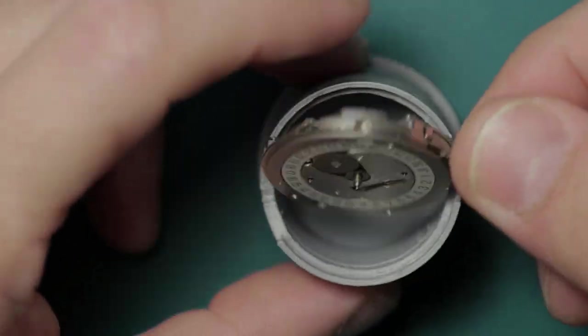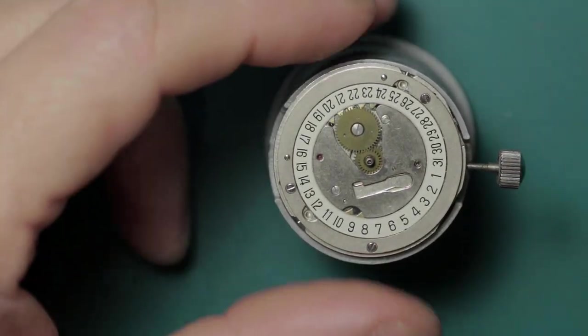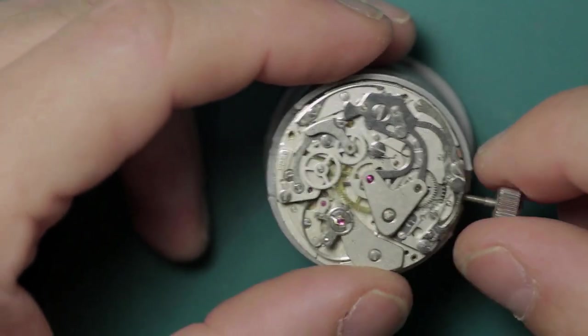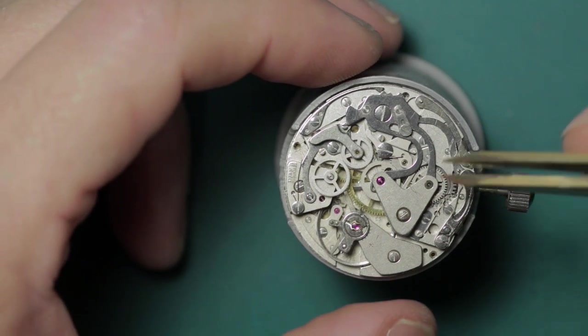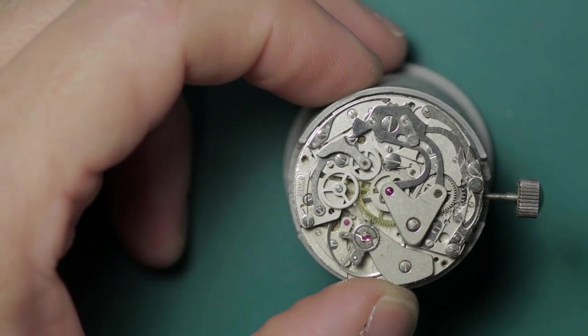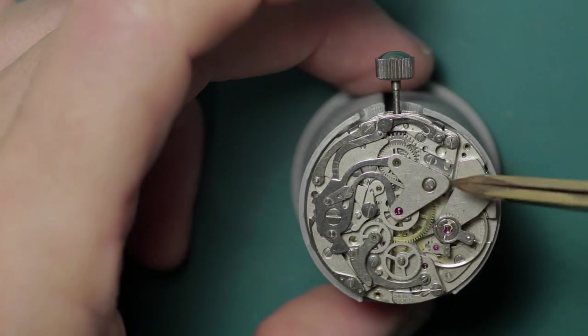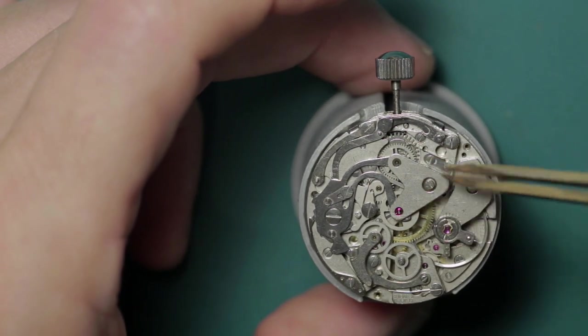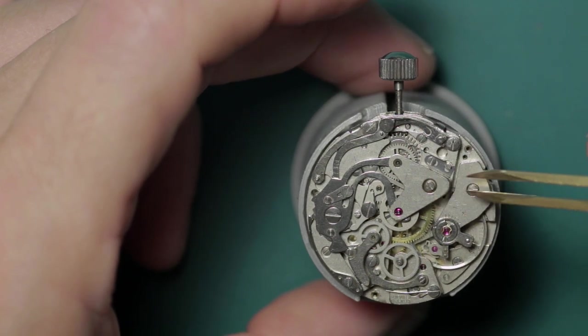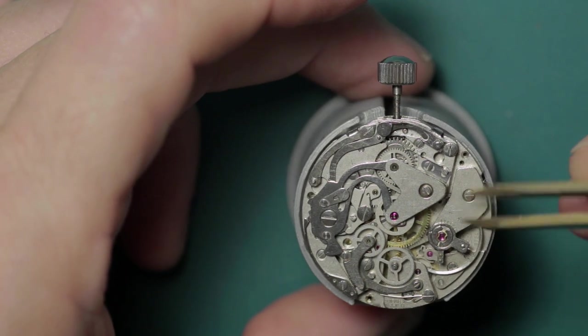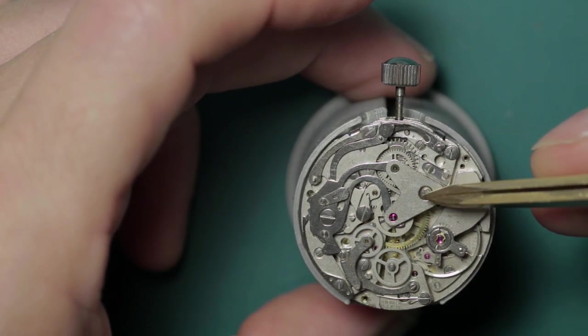If you flip to the back of the movement, you can see the immediate similarities with the Poljot 3133. In particular, the chronograph bridge which is this flying V shape, this Gibson flying V shape if you imagine a guitar neck coming out here and some long-haired rocker thrashing a cool riff on there.